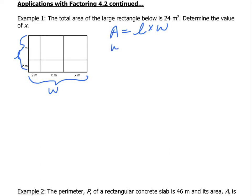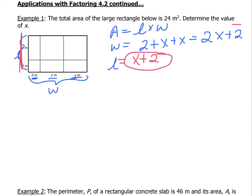Now just for argument's sake, we can call this the width and we can call this the length. So we have w equals, and we're just going to add up these components together. So we've got 2 plus x plus x, which simplifies to 2x plus 2. And for our length, which is this part right here, we can add together the x and the 2. So we'll call it x plus 2.